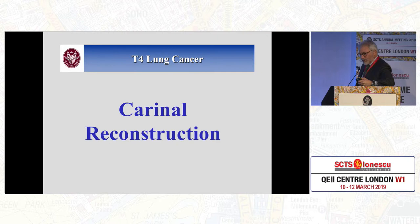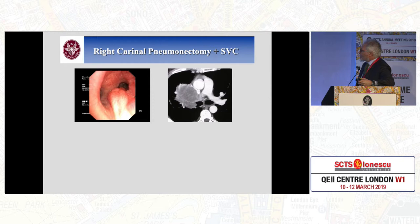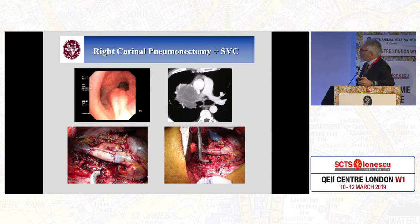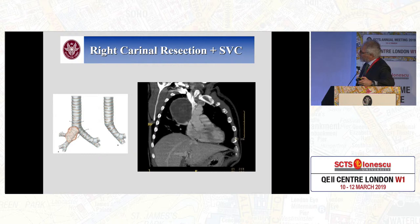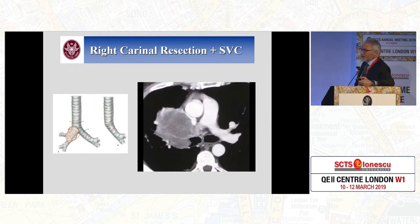The second topic is carinal reconstruction. There are several types of invasion of the carina — on the right, on the left, on both sides. In many cases, carina reconstruction, since it's related to very central tumors, requires also reconstruction of the superior vena cava. Here there is a video that addresses both carinal reconstruction and reconstruction of the superior vena cava. It's a very bulky tumor that at preoperative staging was N0.